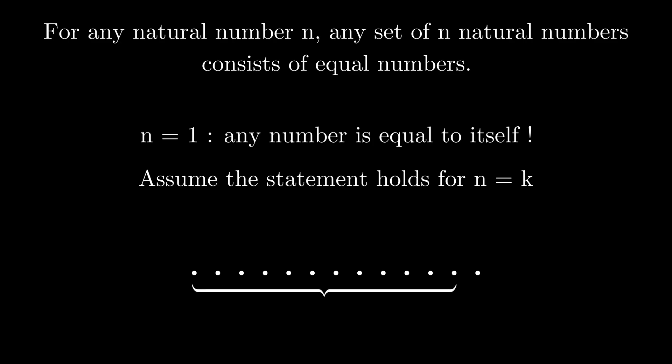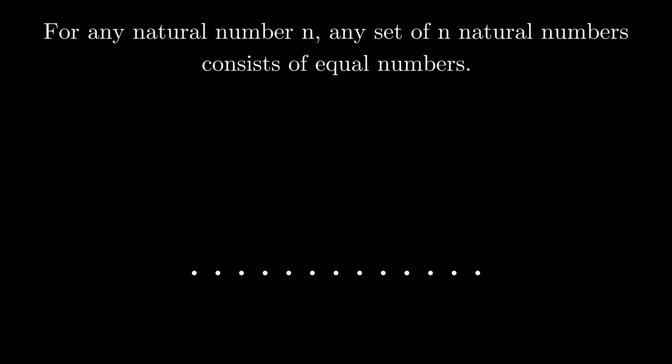We can take the first k elements, which are going to be equal by our hypothesis, and then take the last k elements. So, all of them are equal and all infinity of natural numbers are the same.